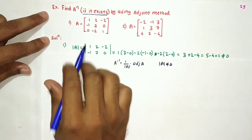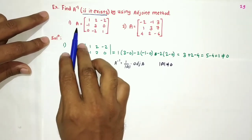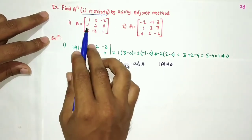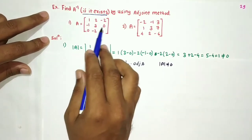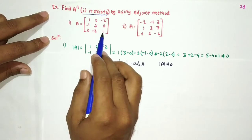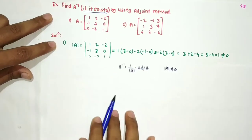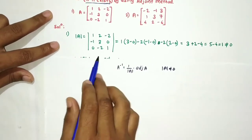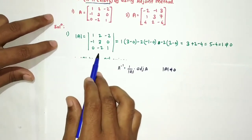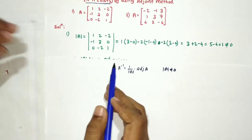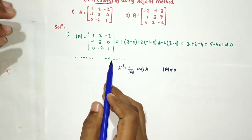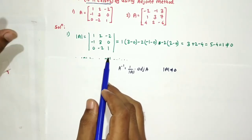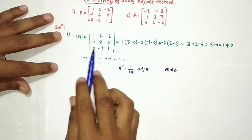We have A equal to the matrix [1, 2, -2; -1, 3, 0; 0, -2, 1]. Firstly, we will check its determinant. If the determinant is non-zero we will proceed further; otherwise we stop there.